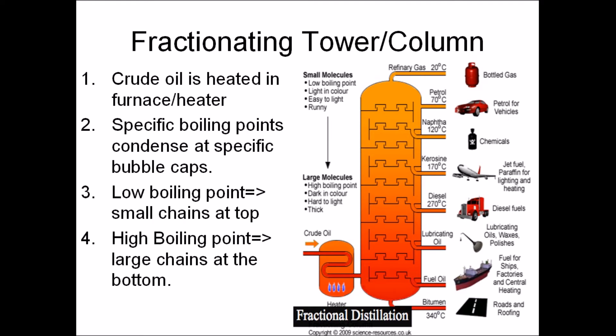Crude oil is a mixture of different hydrocarbons that need to be separated in order to be useful. The mixture is separated by fractional distillation. Step 1: crude oil is heated in a furnace where it's evaporated. Step 2: the vapor passes through a fractionating tower from the bottom. Step 3: compounds condense at different fractions, dependent on their chain length and boiling points. Higher boiling points condense at the bottom and lower boiling points condense higher up.